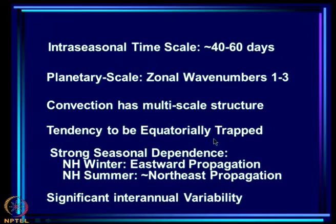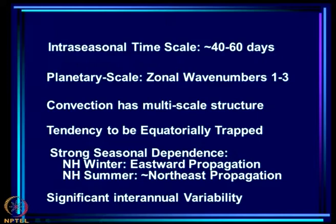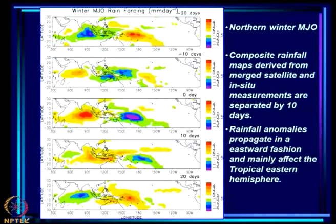MJO is an intra-seasonal time scale phenomenon of 40 to 60 days, planetary in scale — going from about 50 degrees east to 140 degrees west, almost halfway around the globe. Convection has multi-scale structure and a tendency to be equatorially trapped. However, while the eastward propagation is characteristic of northern hemispheric winter, in northern hemispheric summer there is northward propagation over the Indian longitudes on the same time scale, so MJO can be thought of as having a northeastward propagation. There is also significant interannual variability.